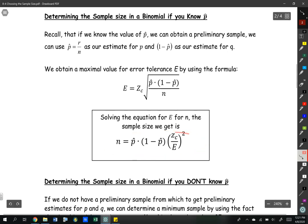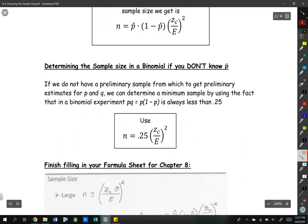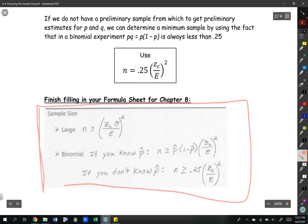The final scenario is determining a sample size in a binomial if you don't know p-hat. If you don't have those values, what we're going to do instead is use 0.25 for the p-hat times 1 minus p-hat. This is the last row at the bottom of your formula sheet. You need to pause the video and fill that in right now.